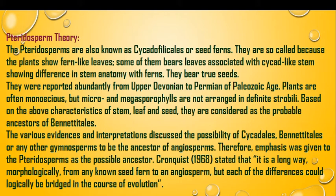Microspores are minute and they are motile or flagellated. They show many more different characteristics which resemble them with angiospermic plants. They were reported evidently from upper Devonian to Permian of the Paleozoic era. Plants are often monoecious but micro- and megasporophylls are not arranged in definite strobili.